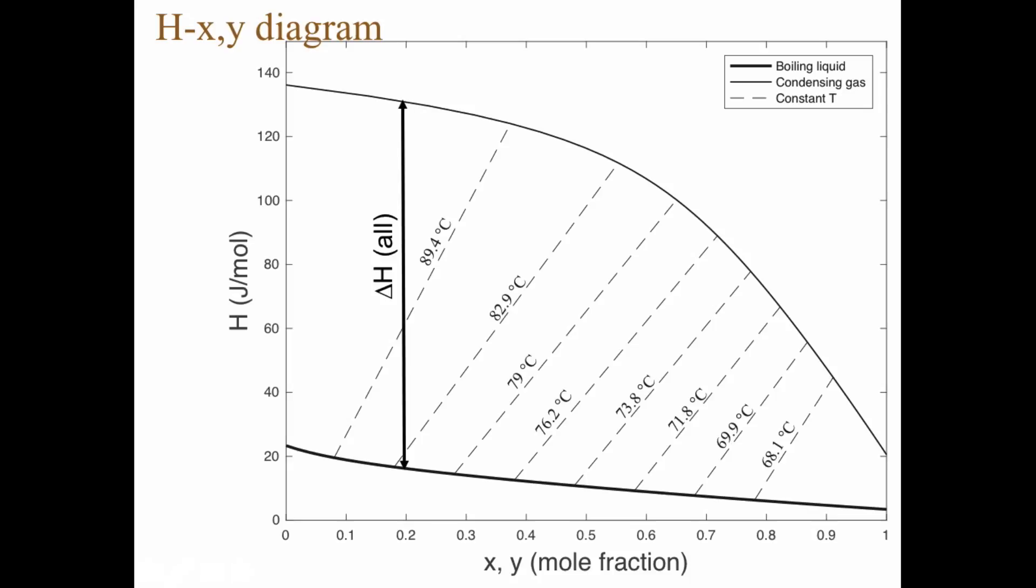If instead we want to have an equilibrium between two phases, then the two phases have to have the same temperature. So we have to follow a constant temperature line. Now this is a simplified diagram, but let's draw something that's approximately parallel to that one. Note that the slopes are actually different on the different lines, but it's somewhere around there. So in this case the evaporation enthalpy is actually less.